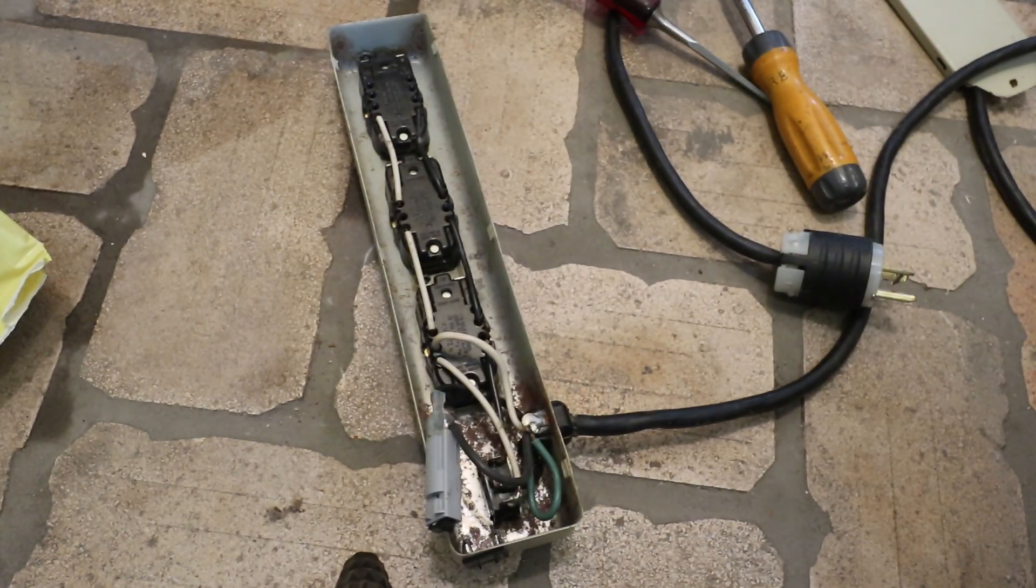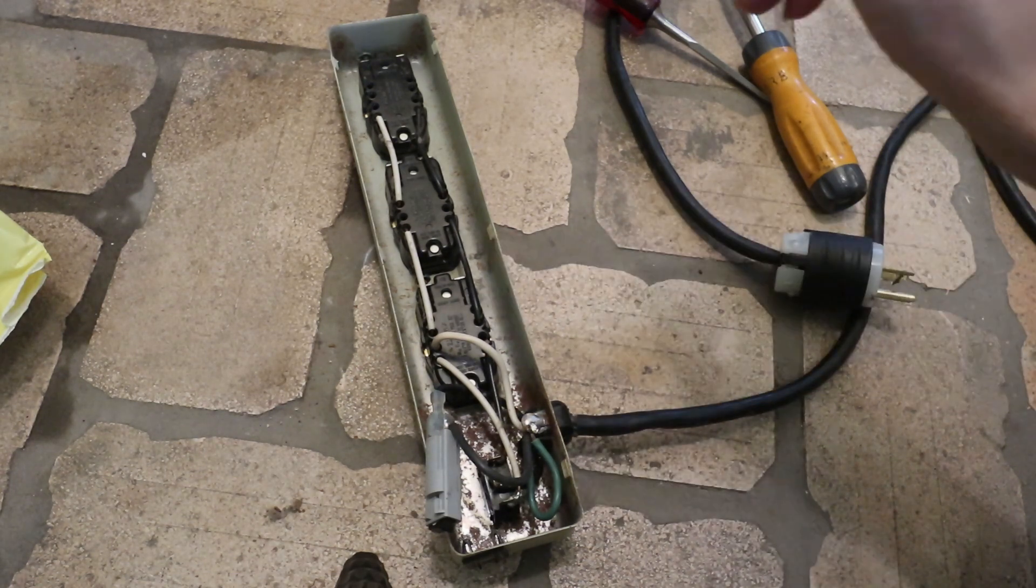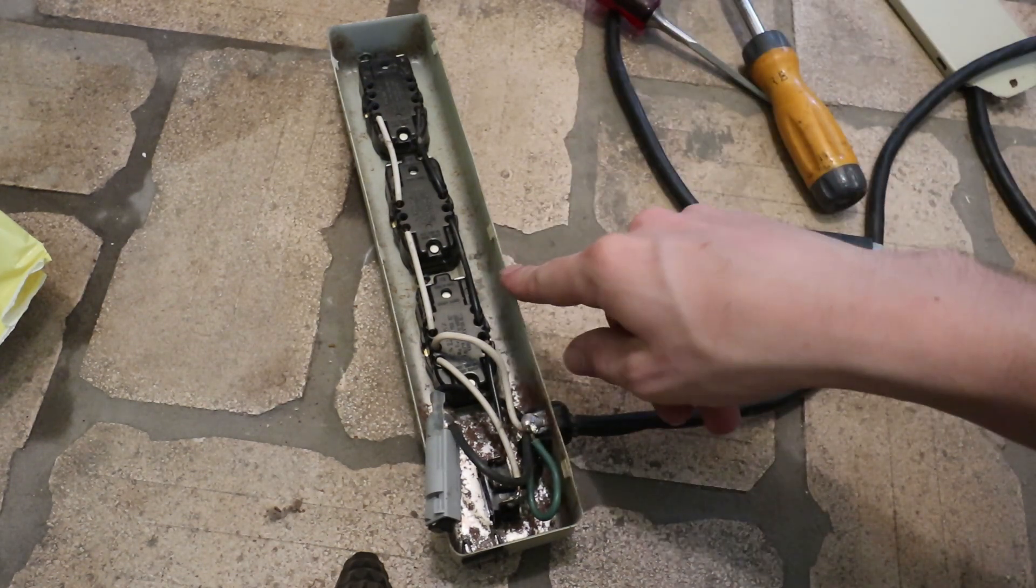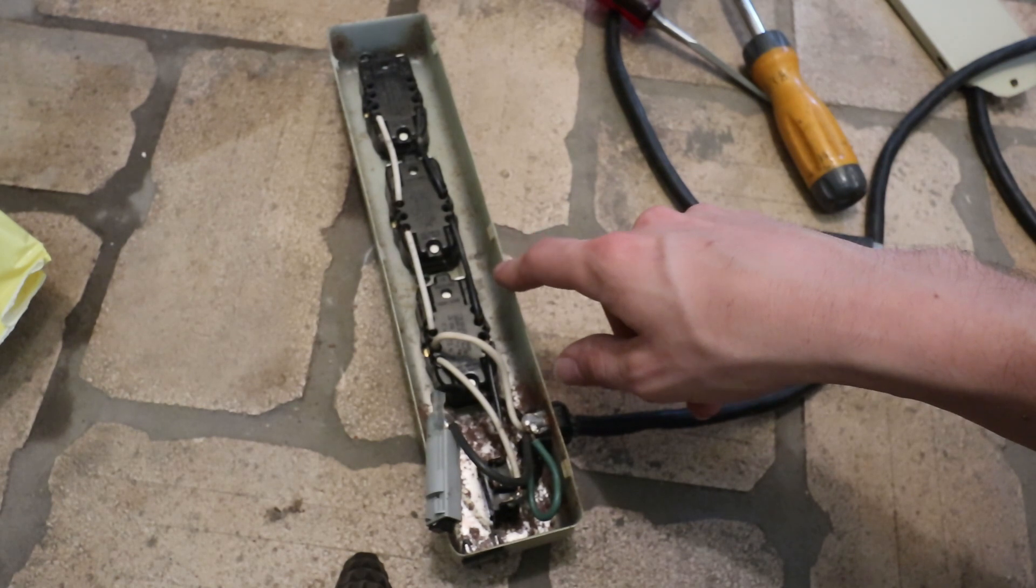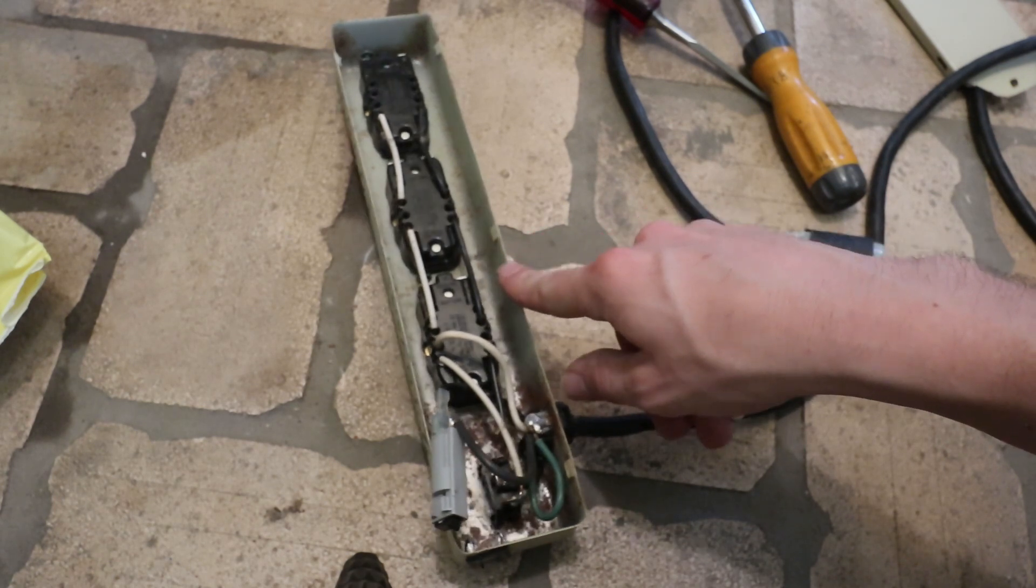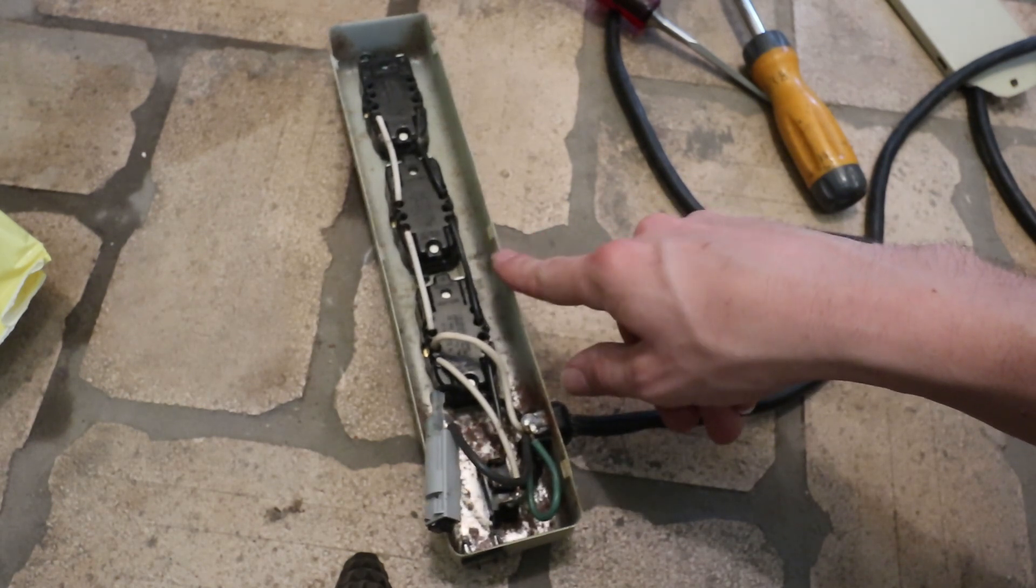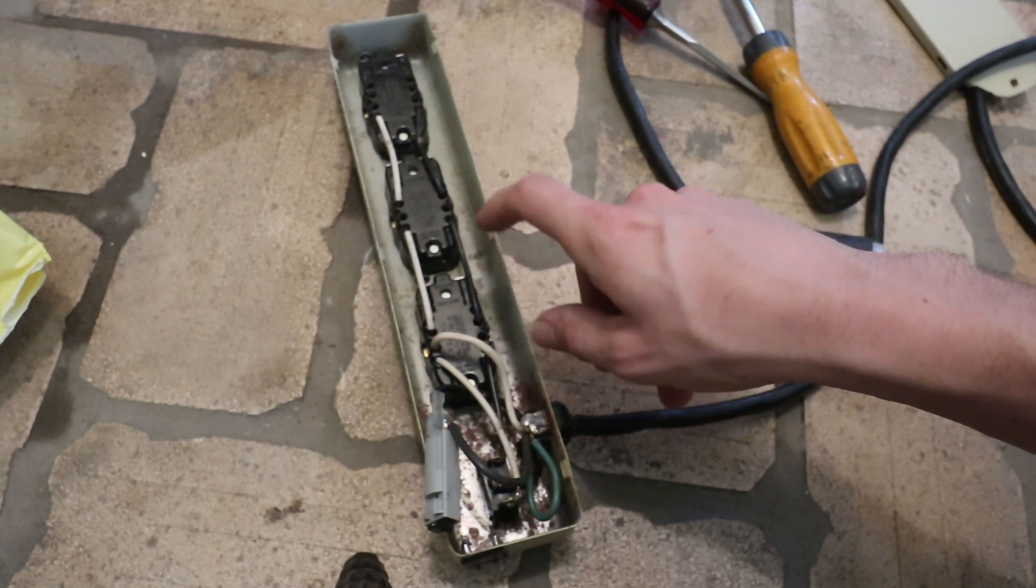So what I'm thinking is I can use one of the thermostats on the water heater and interrupt the circuit to this power strip. Then I can plug both the air conditioner, heat pump, and that circulation pump into this power strip. And that will give me a power strip that turns on when the water heater needs water. So that's what I'm going to do here.